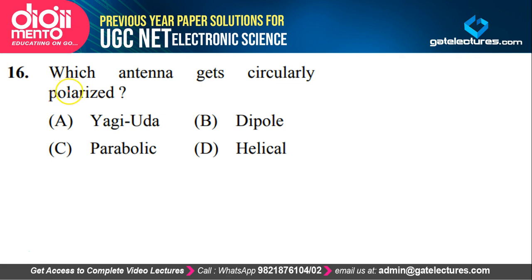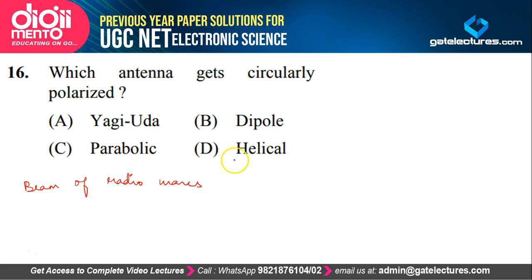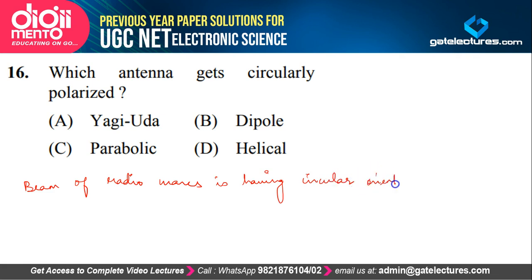They are asking about antennas — which antenna gets circularly polarized. There are two types of polarizations we study in antennas: linear polarization and circular polarization. In circular polarization, the beam of radio waves has a circular orientation along the antenna axis.